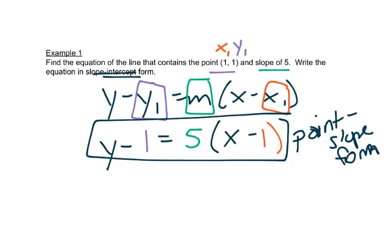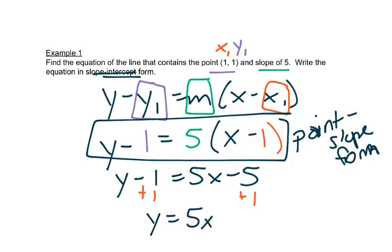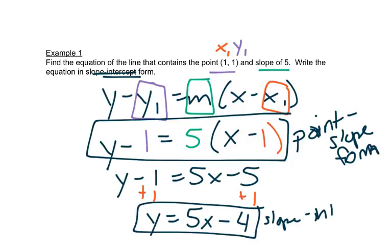So this is point-slope form. Now they want it in slope-intercept form, so we'll distribute the 5, and then we'll add the 1, and this is slope-intercept form. Point-slope form is just a starting spot to be able to move us to where we want to be.